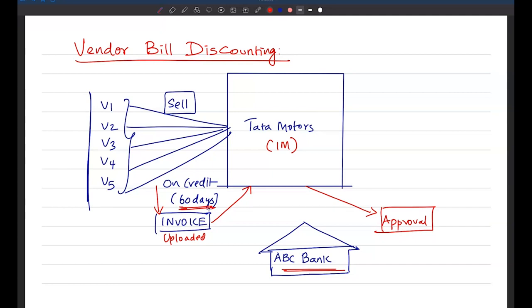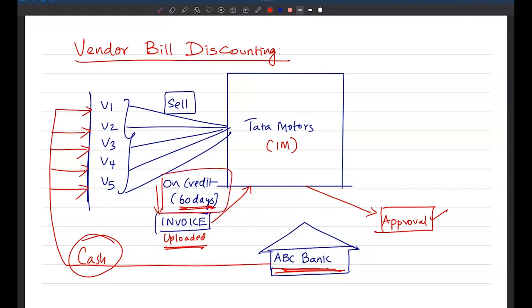Now what this financial institution will do? It has an arrangement with Tata Motors and based on that arrangement it will fund those vendors by discounting their respective invoice. They have raised invoice, that is uploaded. Tata Motors reviewed, Tata Motors approved it. So whatever is the invoice money after deducting their discount charges they will finance these vendors. So these vendors are going to get cash. They need not wait for this credit period of 60 days.